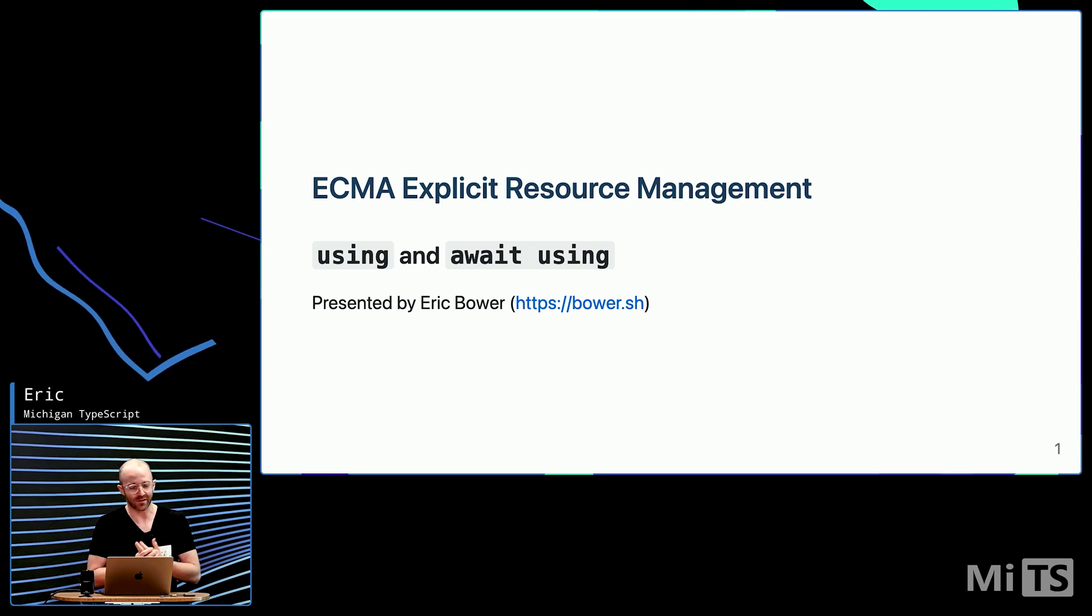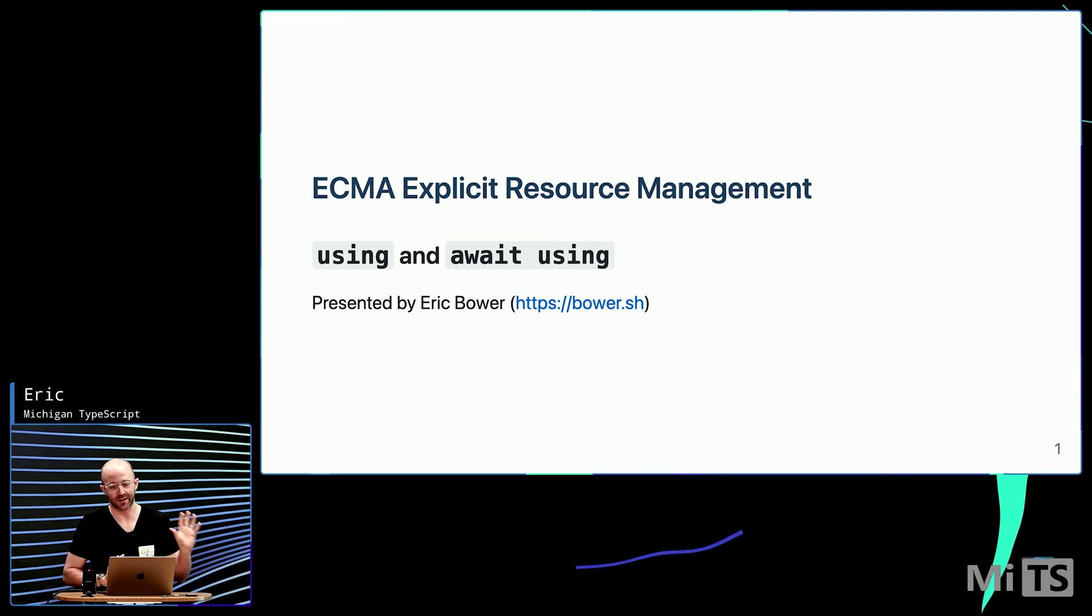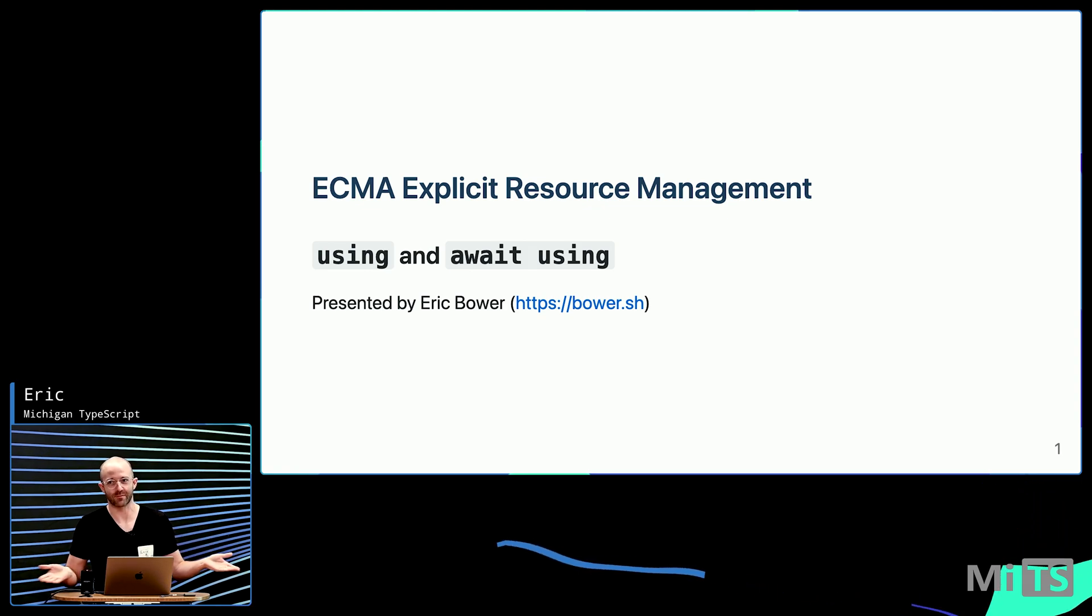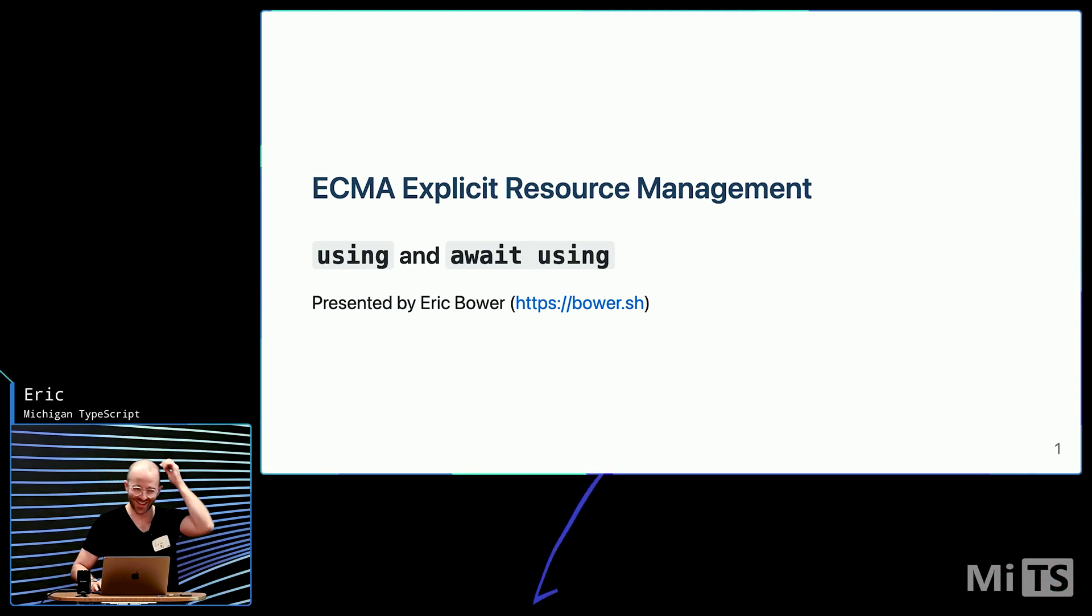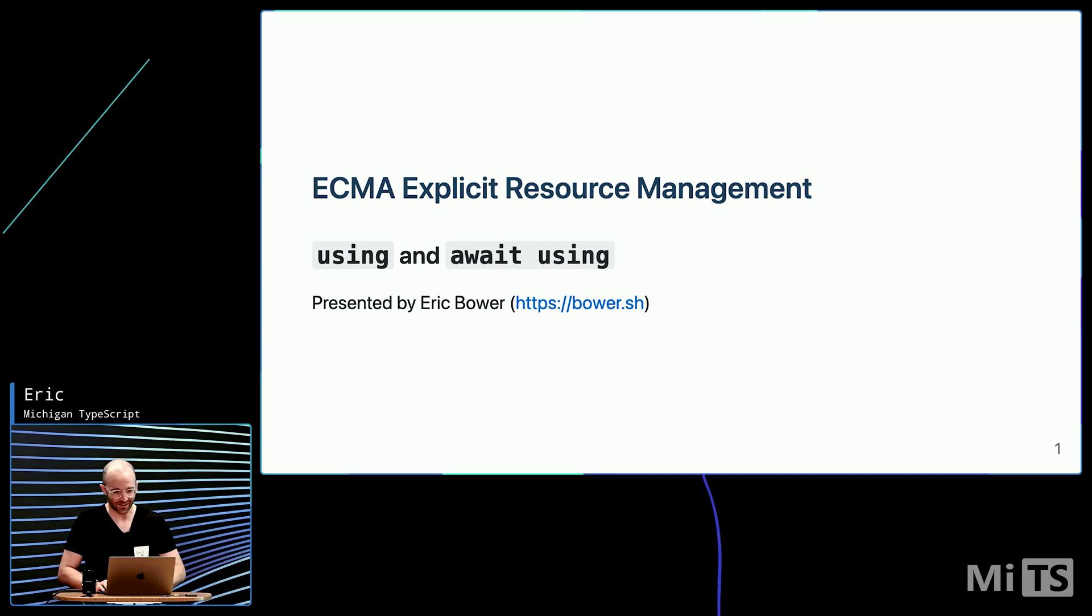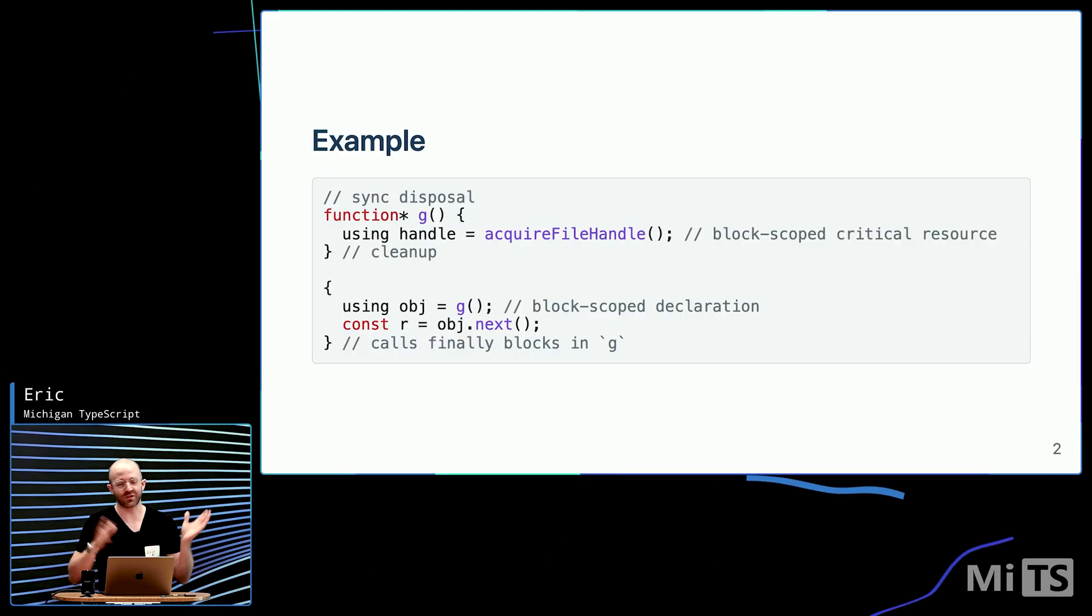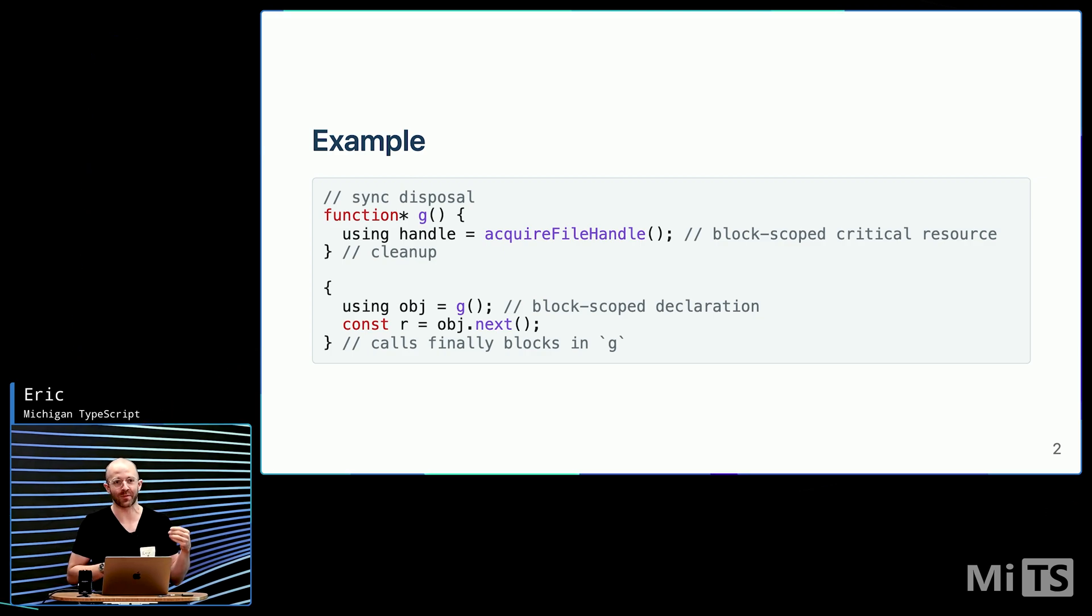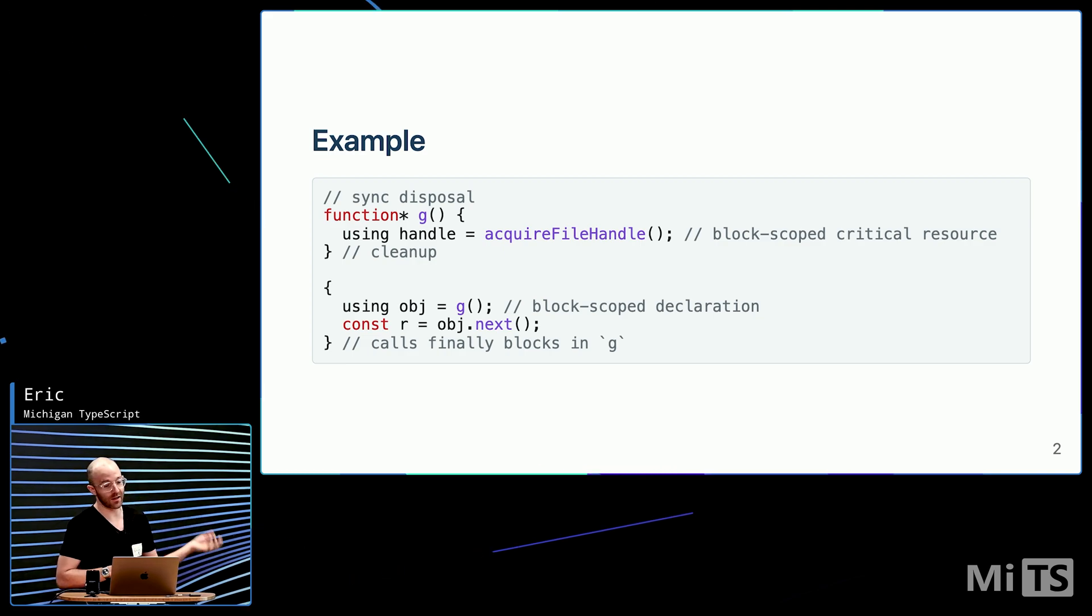I'm here to present a feature in TypeScript 5.2, which is revolving around explicit resource management using and await using. I just want to jump right into some code so we have a rough idea of the problem and the proposed solution. Here's a synchronous example where we acquire a file handler and it automatically gets released when the function is done executing.